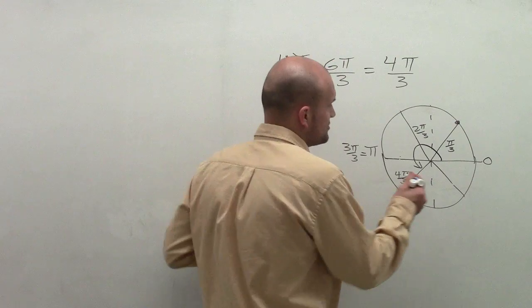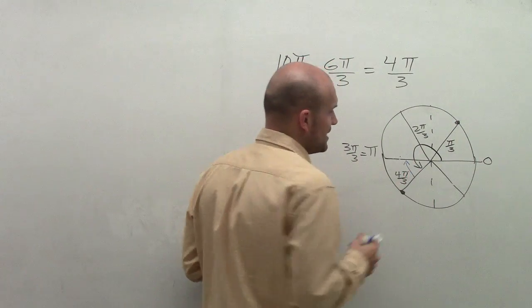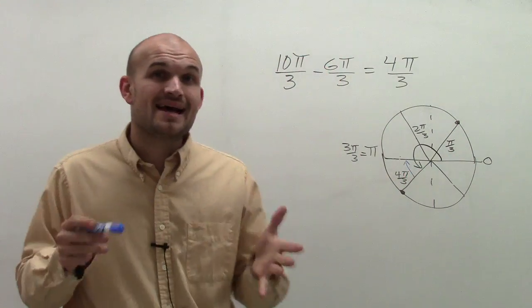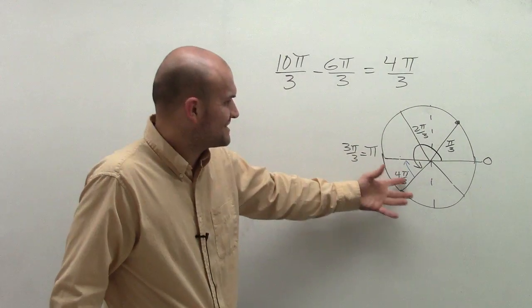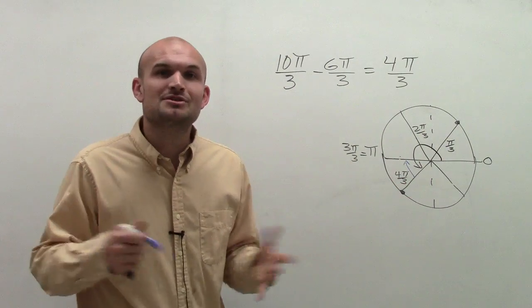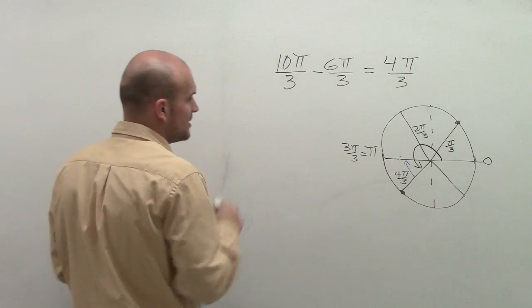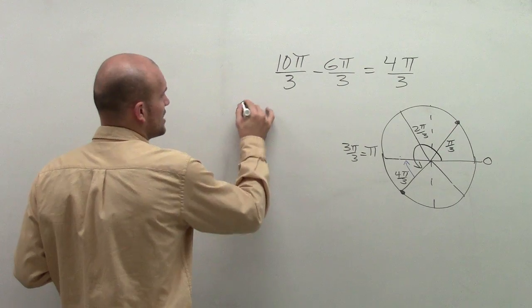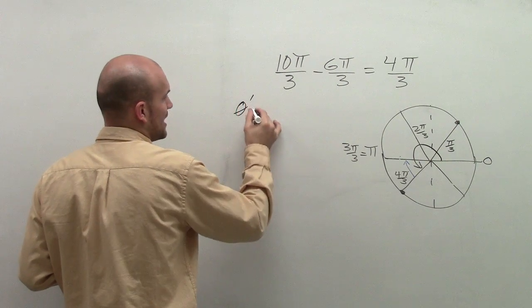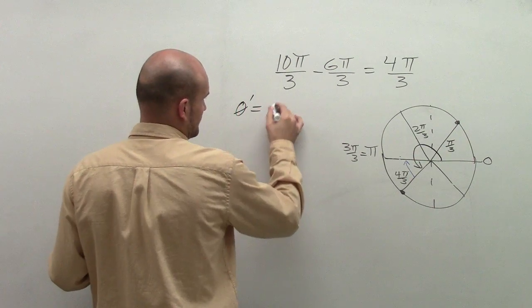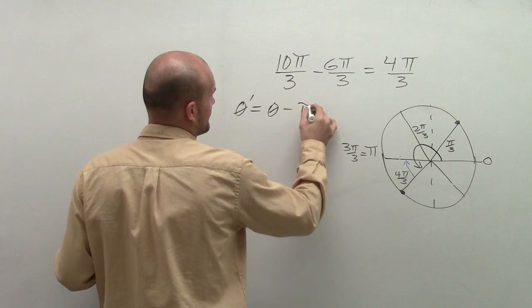So now what we need to do is we need to find the reference angle, the acute angle between my terminal side and my x-axis. To find this angle, you could easily say, well, it's kind of just π/3, right? But let me show you the formula that we use to just make sure that we're doing it correct. So the formula for our reference angle in the third quadrant is going to be θ' = θ - π.